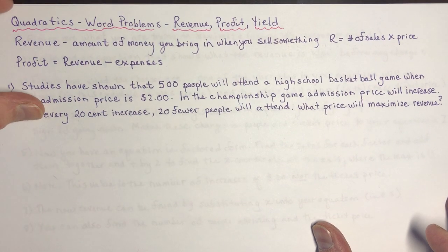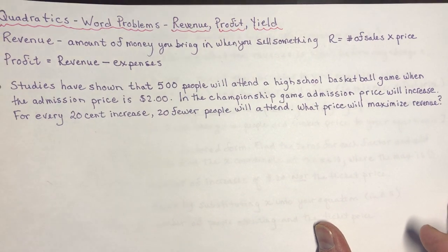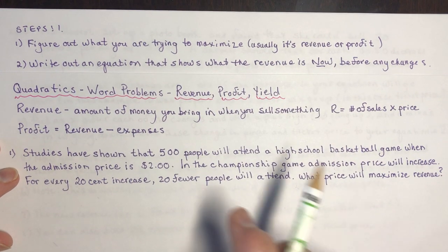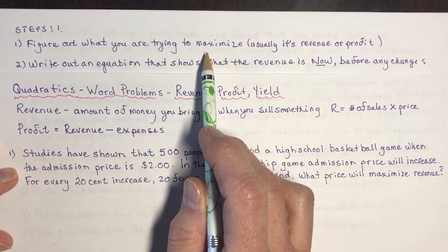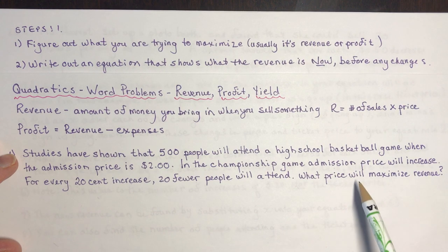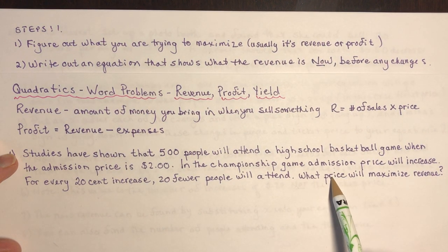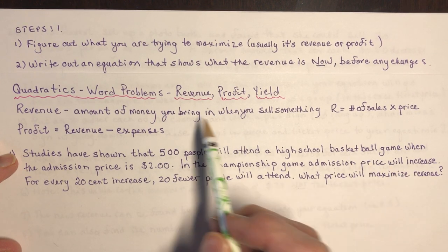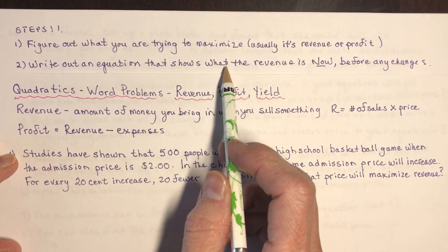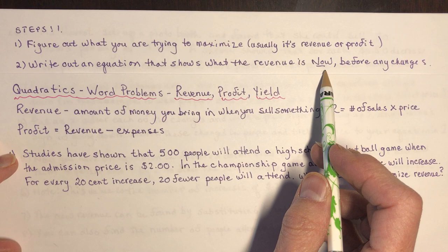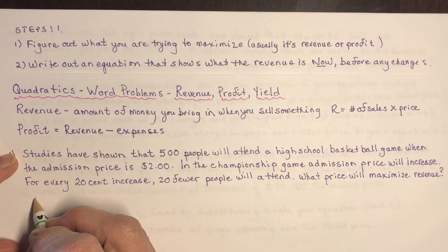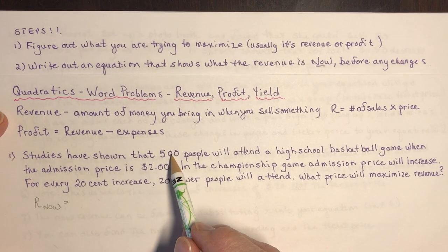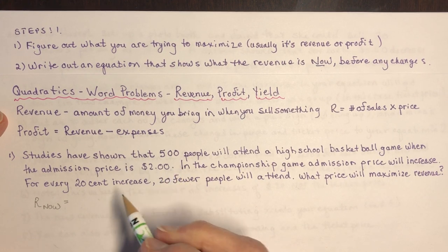On my second sheet I have an outline on what you should be thinking about as you're working the question. The first thing is to figure out what you're trying to maximize — the question tells us: maximize revenue. The second step is to write out an equation showing what the revenue is right now, before any changes. Everyone knows how to do this: what is the revenue right now?